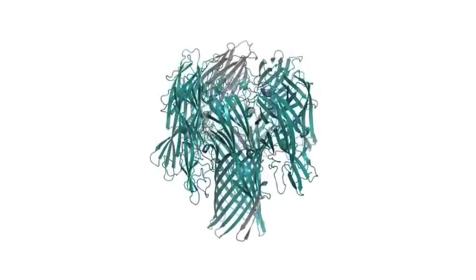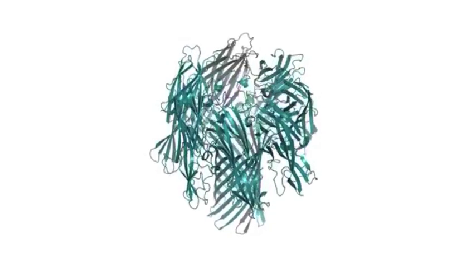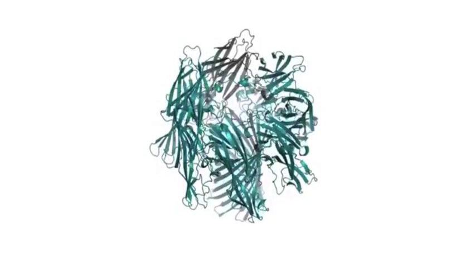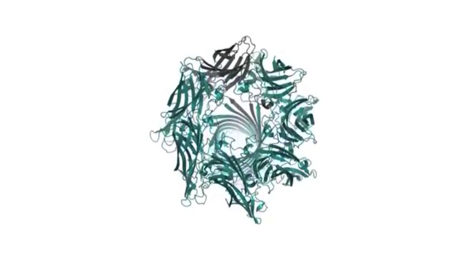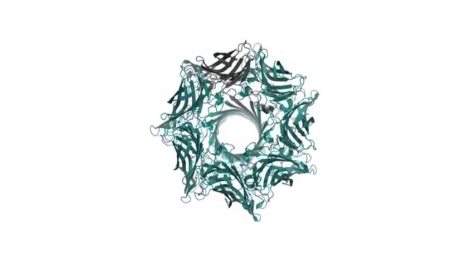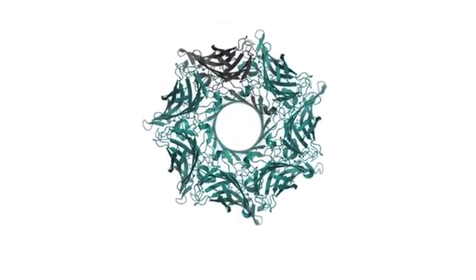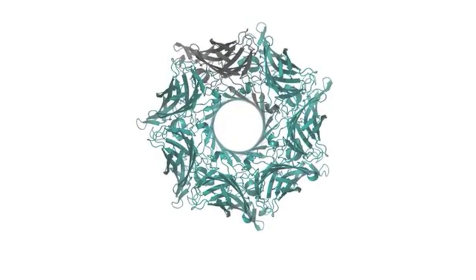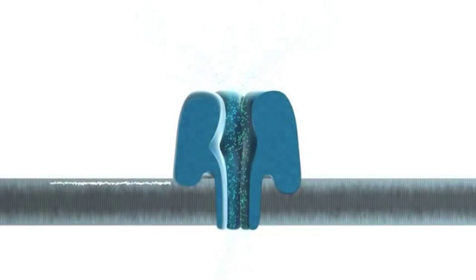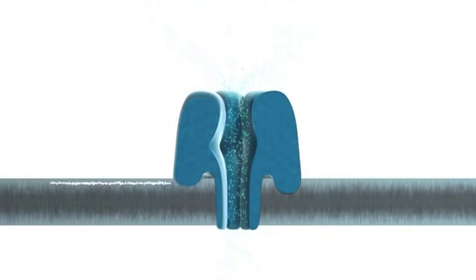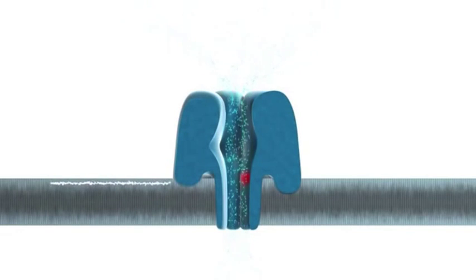There are currently three general pore structures used for sequencing and research for the nanopore: alpha-hemolysin, MspA, and graphene. Alpha-hemolysin and MspA are often embedded in charged lipid bilayers and have a diameter of about one nucleotide from a single-stranded DNA molecule. This small diameter allows the strand to be moved through the pore in single-file order.